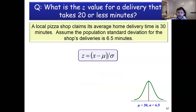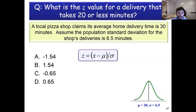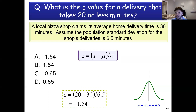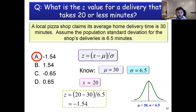If we do the same thing for a delivery that takes 20 minutes: step one, subtract the mean of 30 — notice we get a negative number, so we can eliminate positive answer choices. Step two, divide by 6.5. We convert a 20-minute delivery to a Z value of −1.54 — below average. We just plug the values into the Z-transform and solve for Z given mu, X, and sigma.